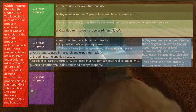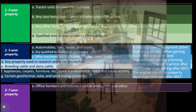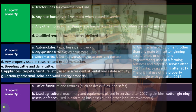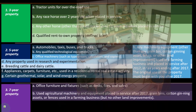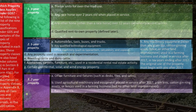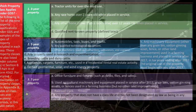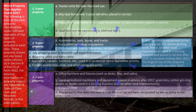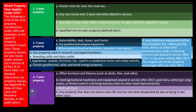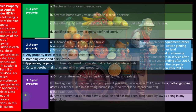Seven-year property is another common category, including office furniture and fixtures such as desks, file cabinets, and safes; used agricultural machinery and equipment placed in service after 2017; grain bins, cotton ginning assets, and fences used in a farming business; railroad track; and any property that does not have a class life and has not been designated by law as being in any other category. This catch-all exists because the IRS can't completely identify everything a business might use, so some research may be needed for items that don't clearly fit a specific category.